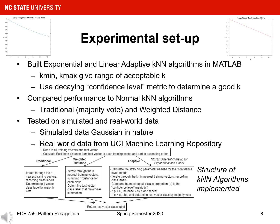As you can see at the top of the slides, the confidence level metrics decay from a proportion of one to one-half in an exponential and linear fashion for a two-class classification problem. I compared the performance of my adaptive KNN algorithms to that of two normal KNN algorithms with fixed k values. One of the normal KNN algorithms classified by a simple majority vote, while the other used a weighted distance metric. The details behind my implementations of the adaptive and normal KNN algorithms can be seen in the flowchart at the bottom of the slide.